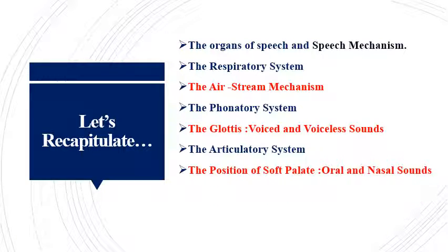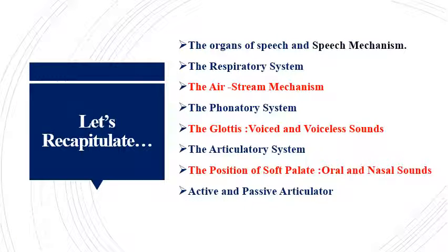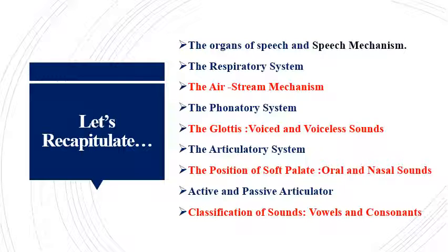We covered oral and nasal sound categories, which exist because of the changing position of the soft palate. The soft palate acts as a valve in the production of sounds. Finally, we had a brief discussion about the active and passive articulators and their role in the modification of the air stream to give the final shape to a sound.